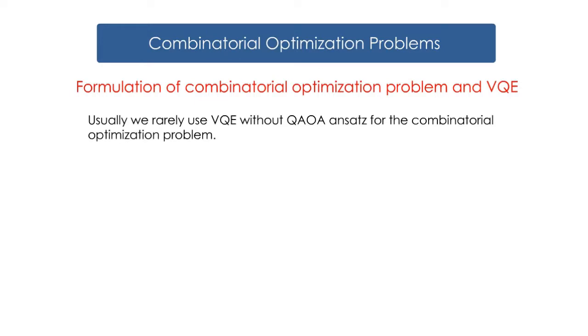Usually, we rarely use VQE without QAOA ansets for the combinatorial optimization problem, but this time we just set a simple 1 qubit problem. The number after Z is the number of qubits. Here, we are using zeroth qubit and first qubit in the quantum circuit.